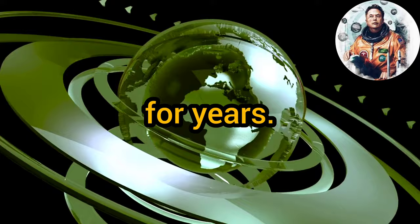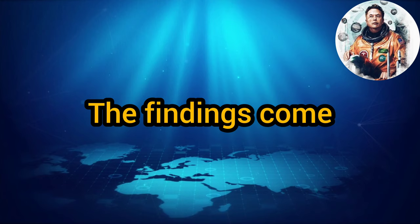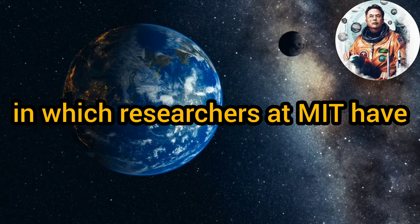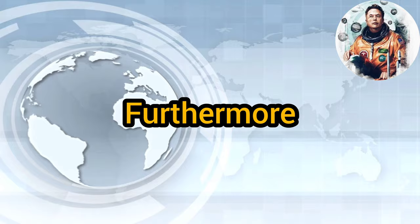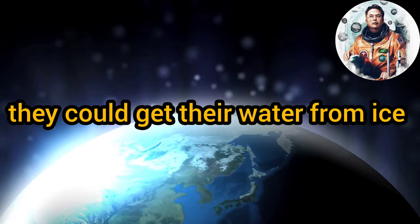Scientists have found that life can be established without water. The findings come from a new study published in Science Advances in which researchers at MIT have shown that if conditions are right on another planet, there might be a way for organisms to survive on much smaller amounts of water than previously thought possible. Furthermore, these organisms would not need access to liquid water. Instead, they could get their water from ice or even from vapor in the atmosphere.